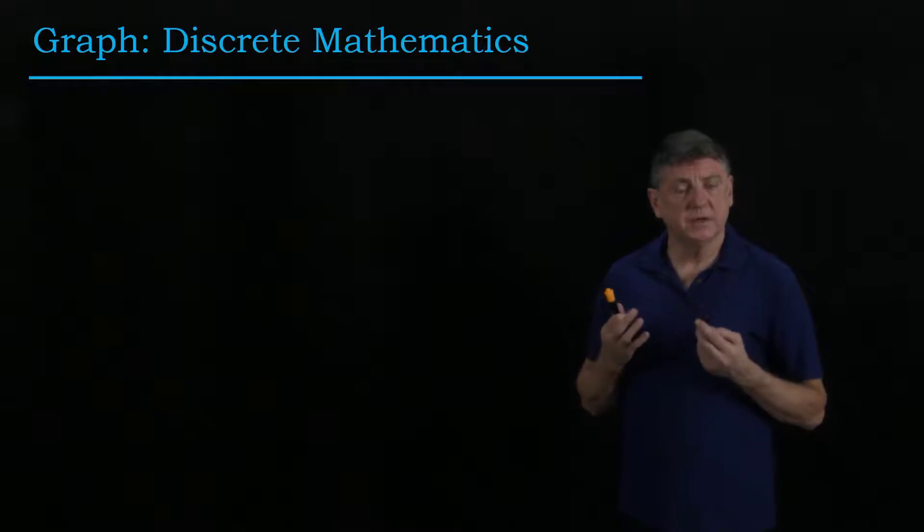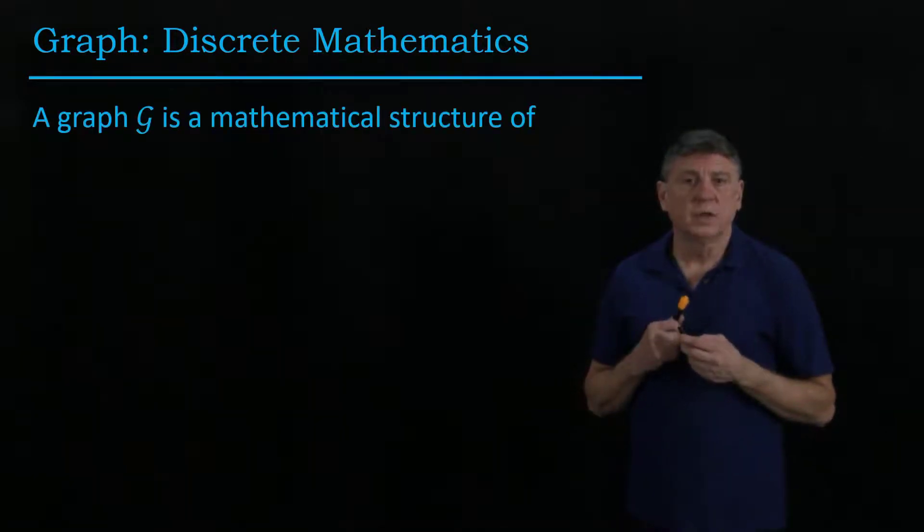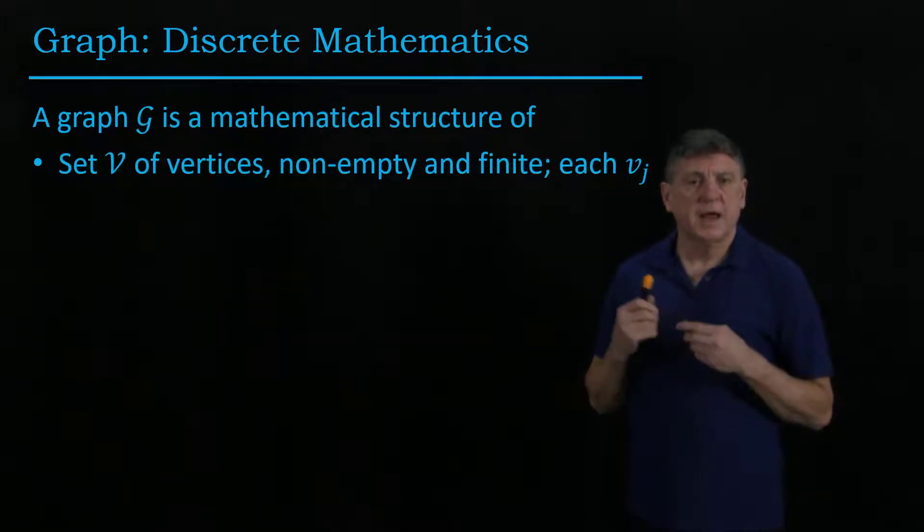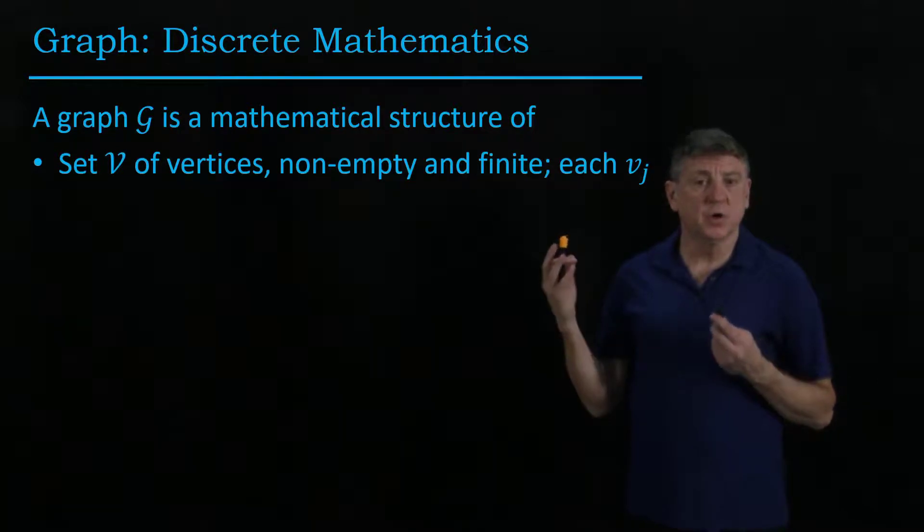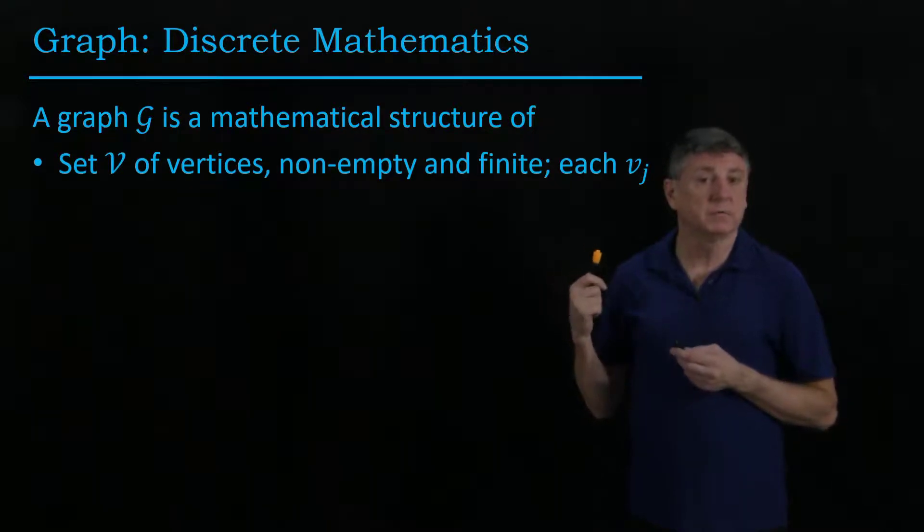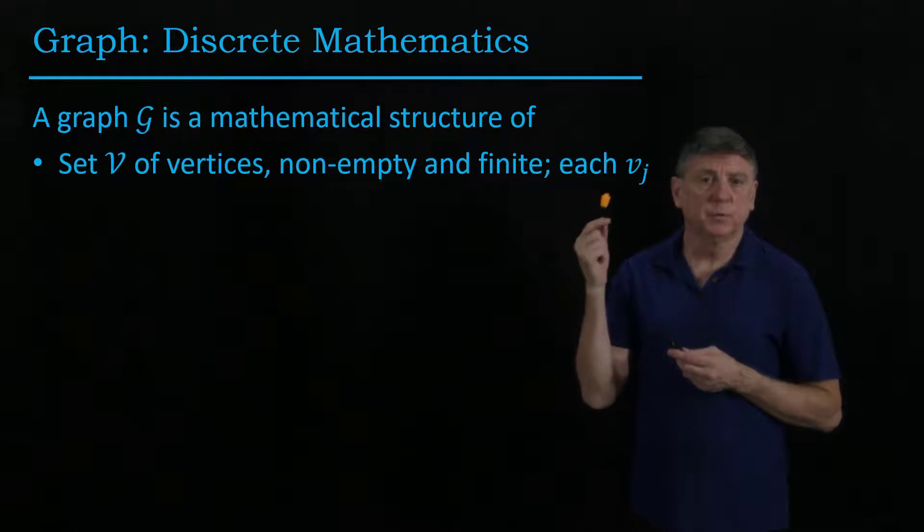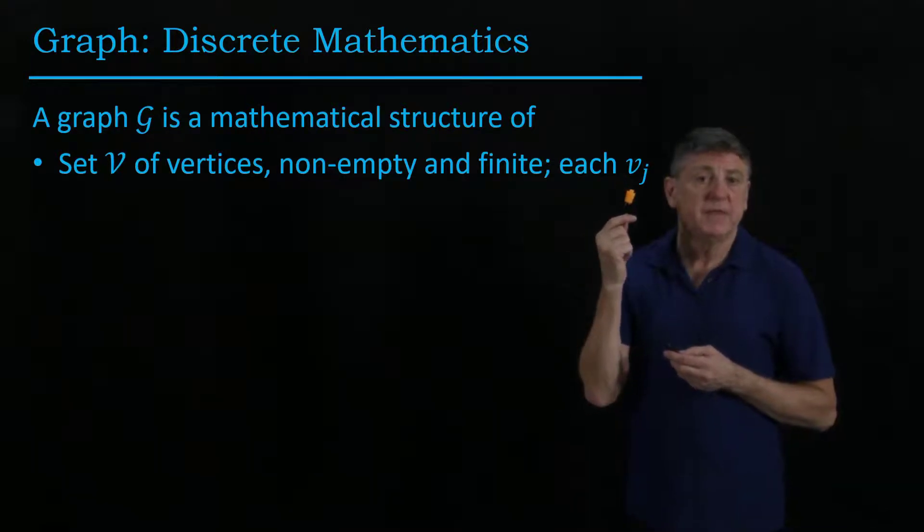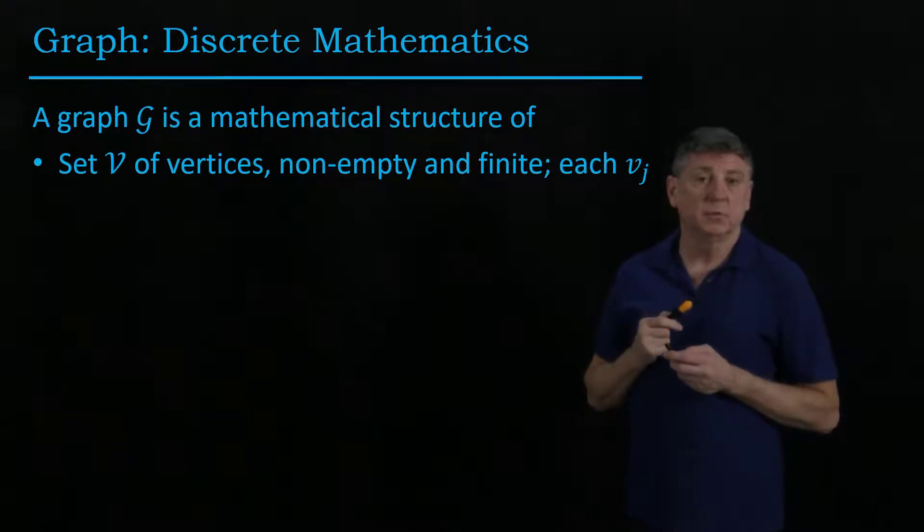So now, what is a graph for our purposes? Well, it's a mathematical structure, and it has a set of non-empty vertices. We're going to require that these be finite, and we'll write these as the symbol V, and then we'll subscript them as needed with an integer.